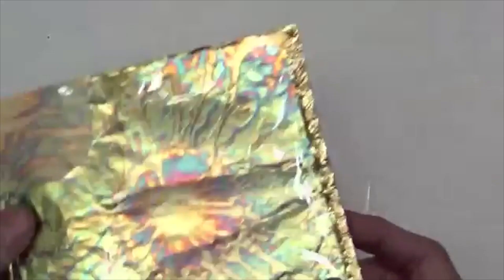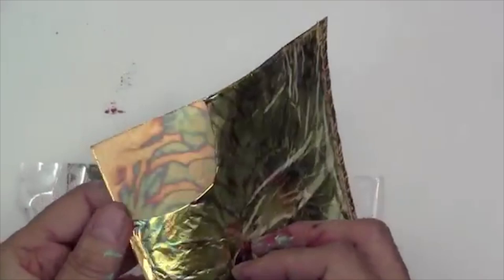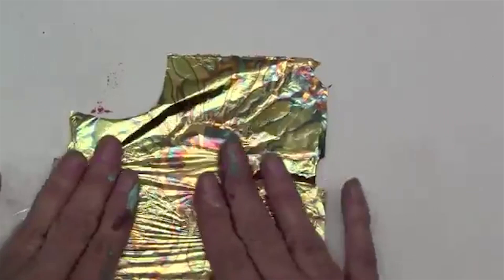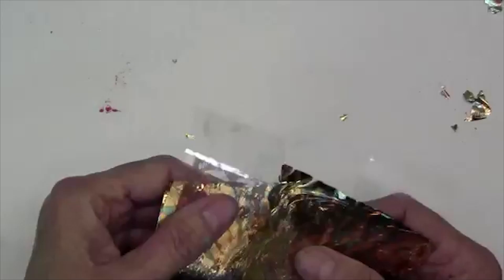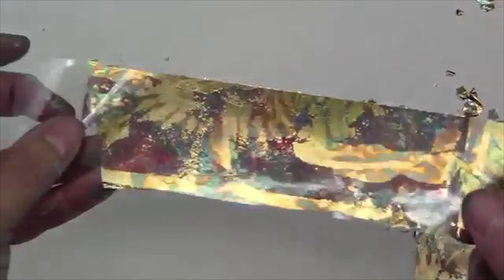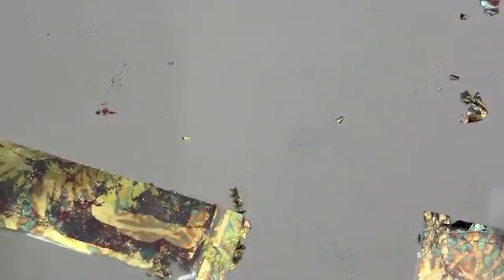Now I'm going to take a sheet of this variegated leaf because it's got all the colors of my print in it and I'm going to stick it to that. So now I've got this pretty variegated collage element that I'm going to put on my piece.